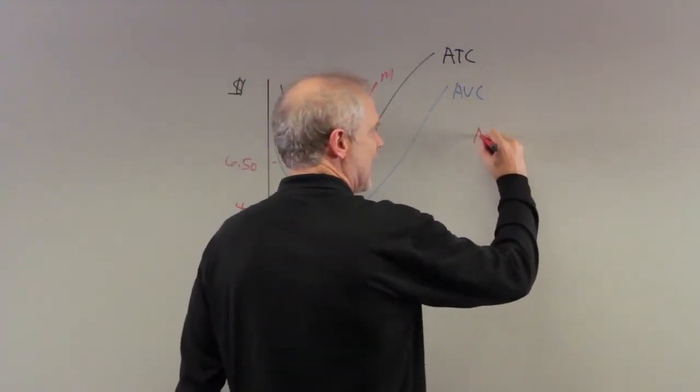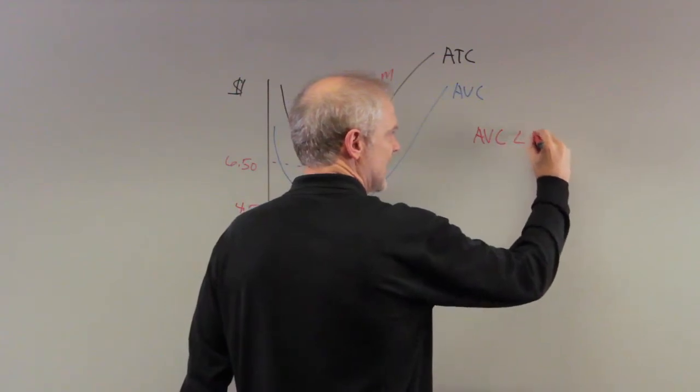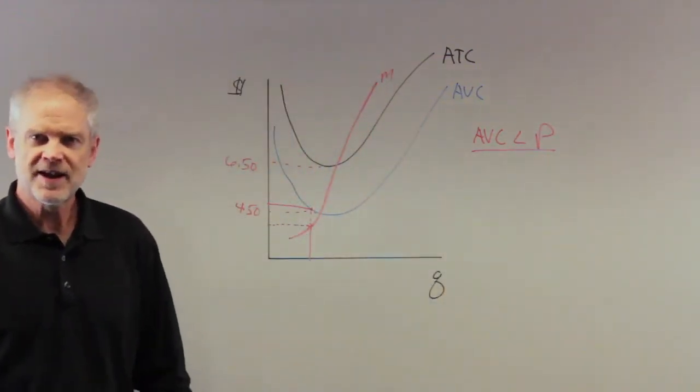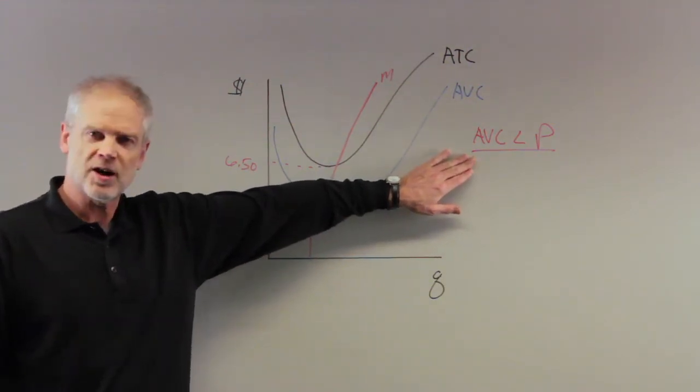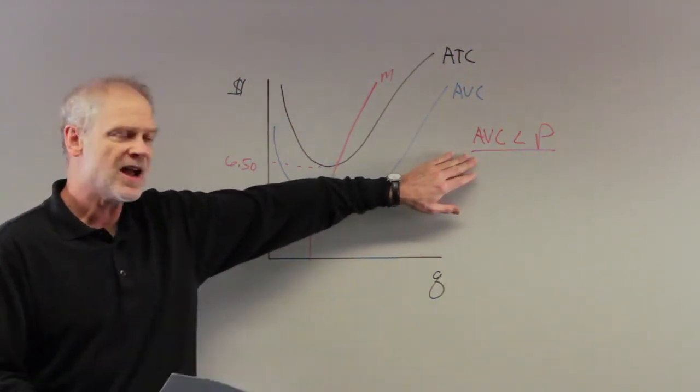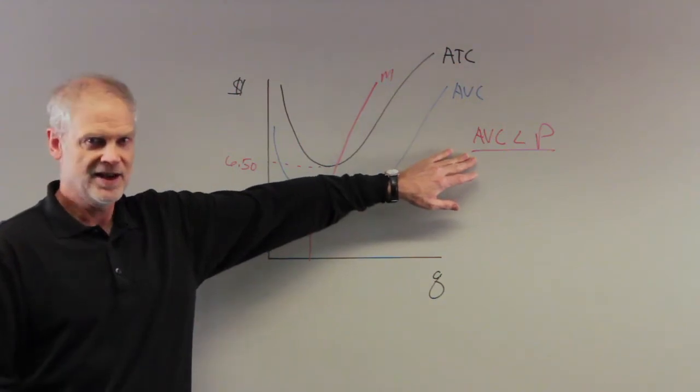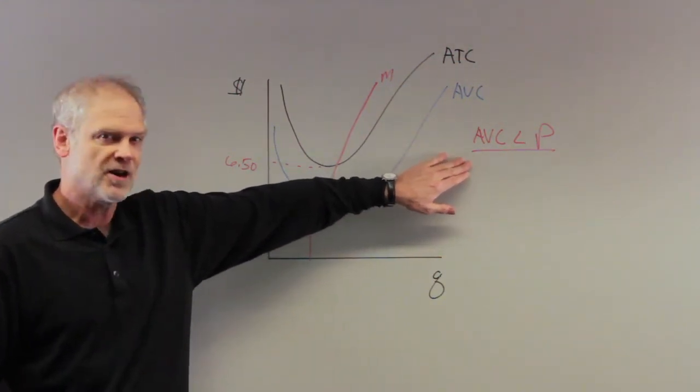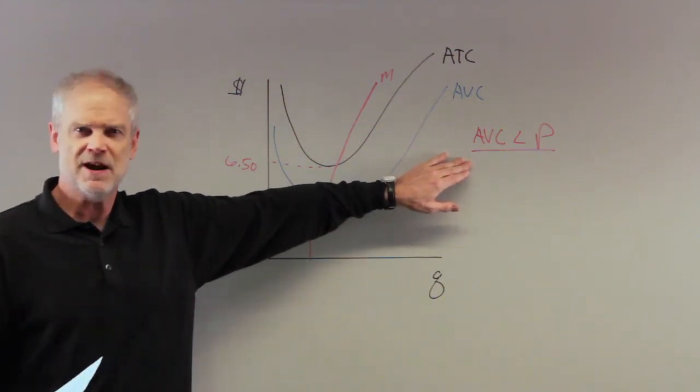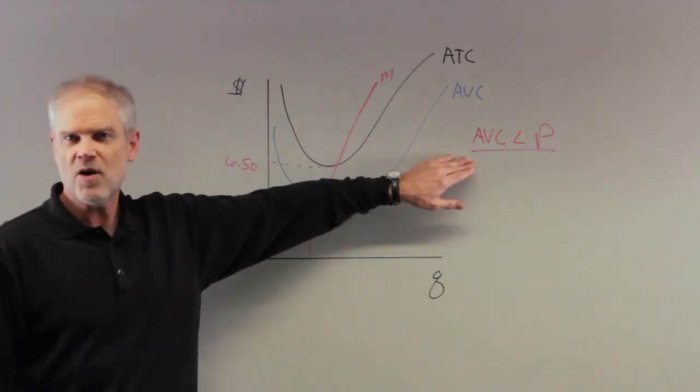In other words, AVC is less than price. So what does that mean? This means, as we discussed in class, you can't even cover your variable cost. You can't cover your labor, your supplies, things you need immediately. This is not your long-term cost. These are your fixed costs. These are your variable costs. In other words, a business person would say, I can't meet payroll. That can't go on.